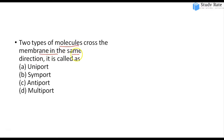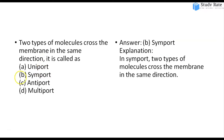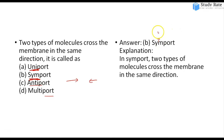Two types of molecules crossing the membrane in the same direction — this is called symport. In symport, two molecules move in the same direction. If only one molecule is moving, that is uniport. In antiport, one molecule goes one way and another goes in the opposite direction. Multiport is when many molecules move in one direction together.